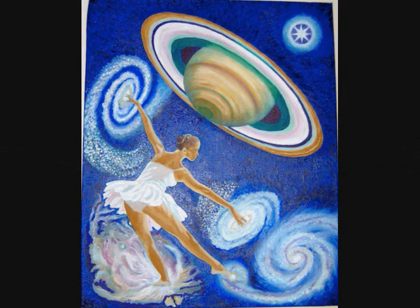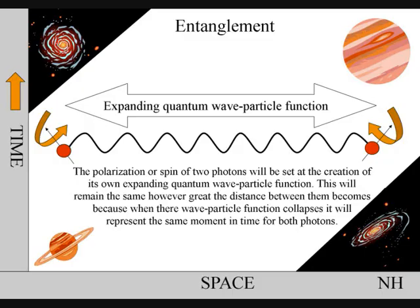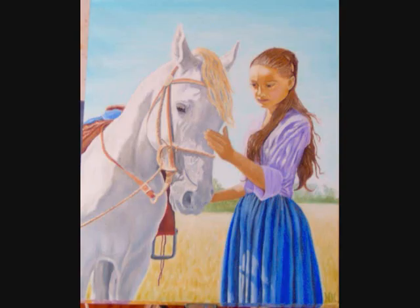To understand entanglement, we have to first understand time. In the diagram above, the polarisation, or spin, of the two photons are set at the creation of its own expanding quantum particle wave function. This will remain the same however great the distance between them becomes, because when their wave particle function collapses, it will represent the same moment in time for both photons.